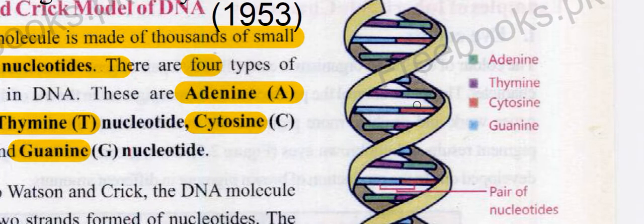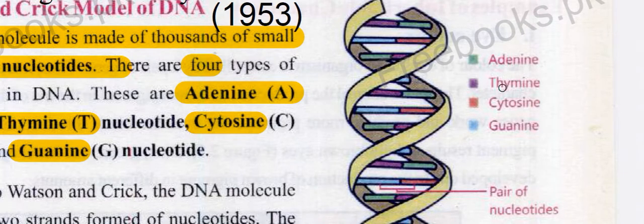In the DNA molecule diagram, there are colourful lines which represent the nucleotides. The green line represents Adenine, the red line represents Thymine, another red line represents Cytosine, and the blue line represents Guanine.